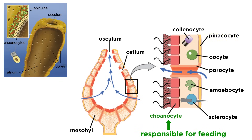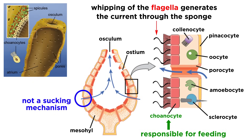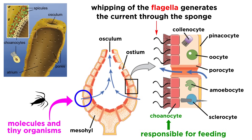However, the cells most responsible for feeding are choanocytes. These are cylindrical cells with a single flagellum, and it is the whip-like motion of these flagella that creates a current to drive water through a sponge's body. So an important thing to understand is that sponges don't suck in water — their insides are lined with tiny flagella-bearing choanocytes that literally create a current around them.